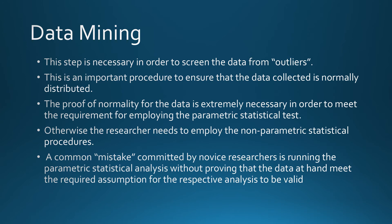Data Mining. This step is necessary in order to screen the data from outliers. This is an important procedure to ensure that the data collected is normally distributed. The proof of normality for the data is extremely necessary in order to meet the requirement for employing the parametric statistical test; otherwise the researcher needs to employ the non-parametric statistical procedures. A common mistake committed by novice researchers is running the parametric statistical analysis without proving that the data at hand meet the required assumption for the respective analysis to be valid.